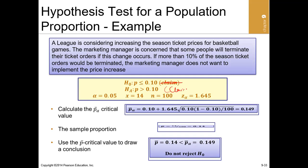The claim will be stated in the alternative — remember, any claim is stated in the alternative. So the proportion of people who want to terminate is 10 percent, meaning p is greater than 0.1. That means the null will be the opposite: p is less than or equal to 0.1.